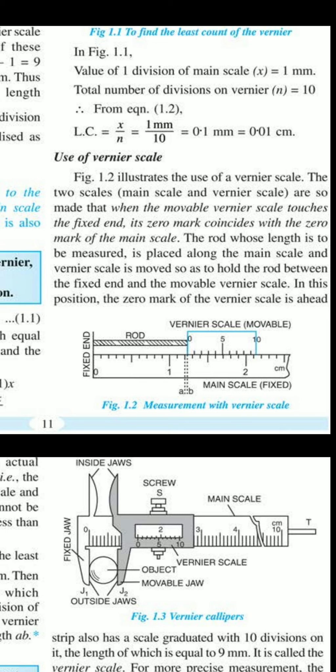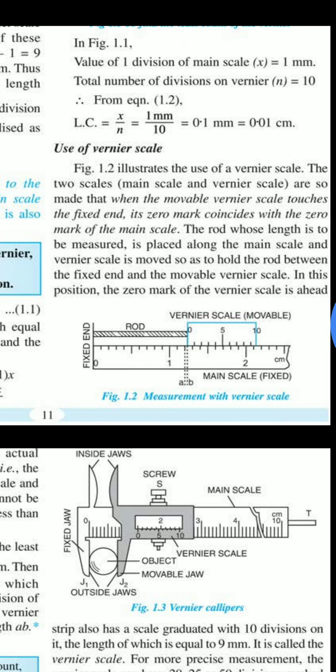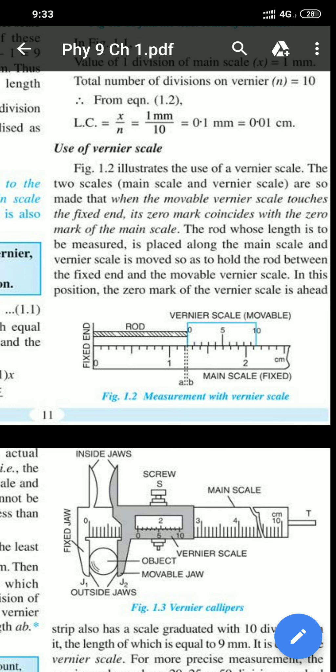So what do we do? We should write that the main scale reading is 1.2, and then we need to measure the distance AB. What do we do for that? We just see which division of vernier scale coincides with any division of main scale. You can see the vernier scale - the first, second, third, fourth division. The fourth division coincides with some division of main scale.